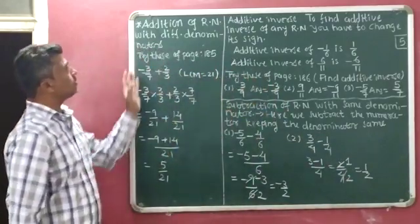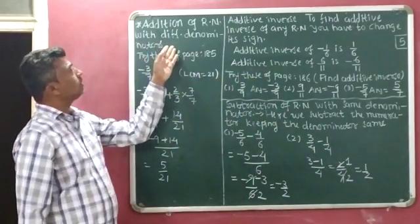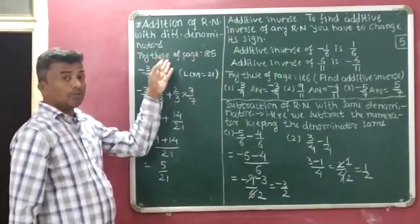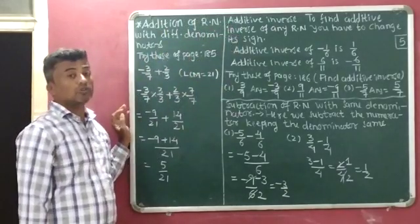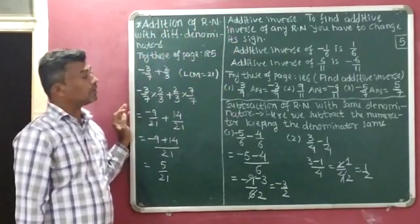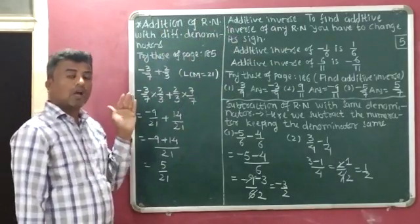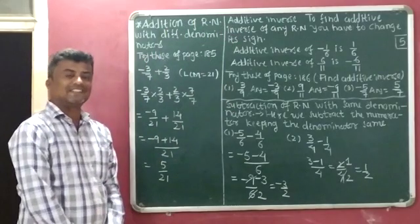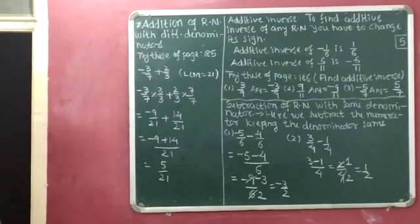So this is the explanation of addition of rational numbers with different denominators, additive inverse, and subtraction of rational numbers with same denominators. I hope you understood this. Thank you.